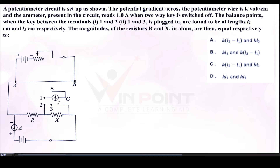First, let us understand the question. In the potentiometer circuit there is a two-way key. When the key is off — no connection — the current through the ammeter is 1 Ampere, as given. So 1 Ampere current is flowing through resistor R and 1 Ampere is also flowing through resistor X.